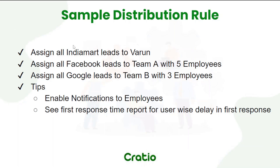All leads coming from IndiaMart, we will assign to an employee called Varun. The second scenario: we will pick all leads from Facebook and assign them to Team A with five employees — it will go in round robin. The first person gets the first lead, then the second, and so on. The third scenario: we will take another source and rotate to another set of people. I will also show you how to enable notifications so whenever a lead is assigned in their name, they will get a notification.